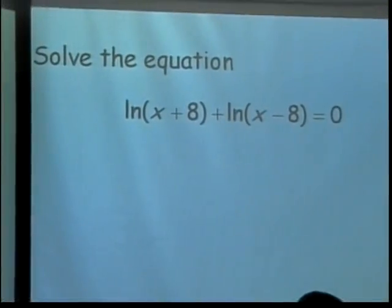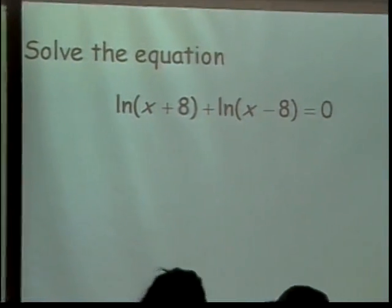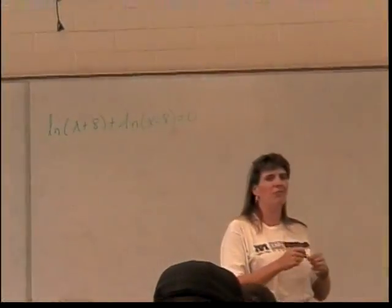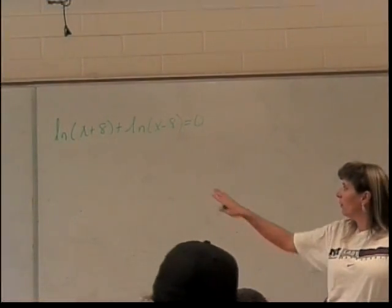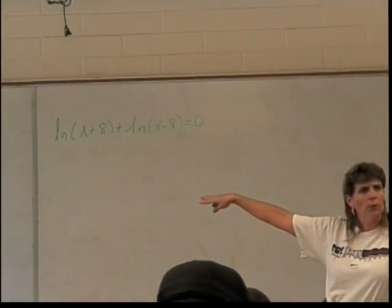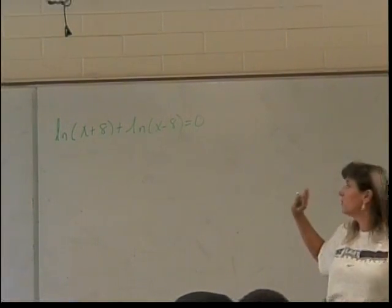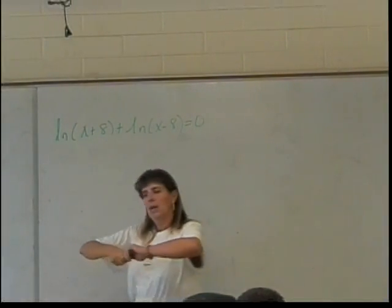Now, what do I do with this equation? The natural log of x plus 8 plus the natural log of x minus 8 equals 0. How can I solve it? I can condense it because once I have a single logarithm equals a number, I could change to exponential form. So since this is two logarithms added together, I can condense them into what?